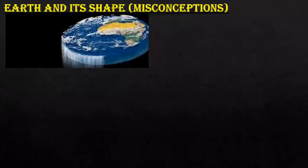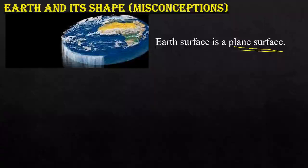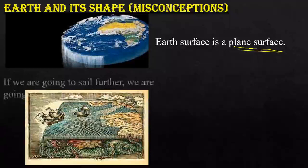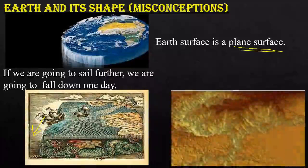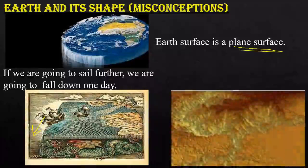Now, the earth and misconceptions about its shape. The first misconception is that the earth's surface is a plain surface. The second misconception is that if you sail further, you will fall off one day — treating it as a flat surface. The third misconception is that the earth is rectangular. The earth is actually represented in terms of geoid and ellipsoid.